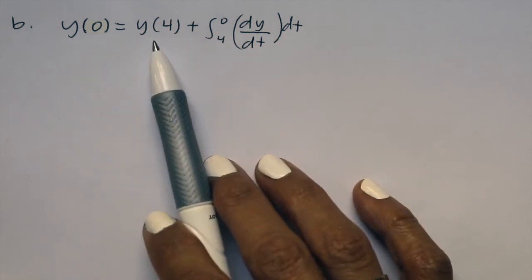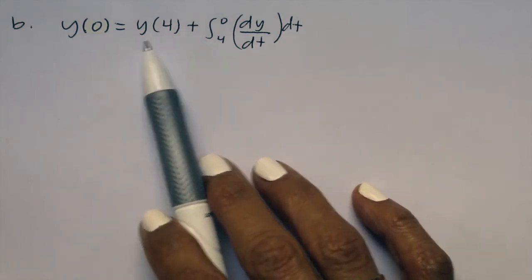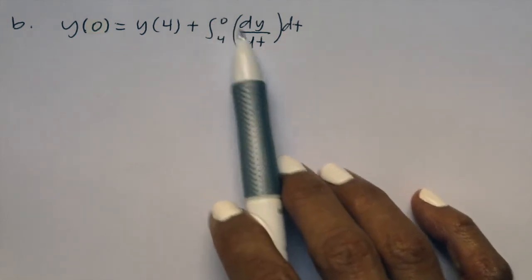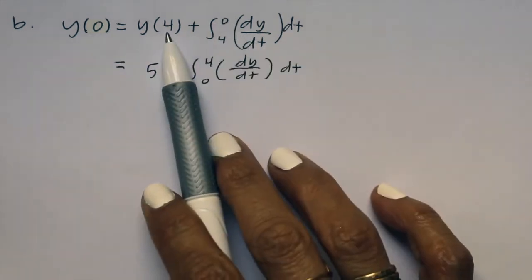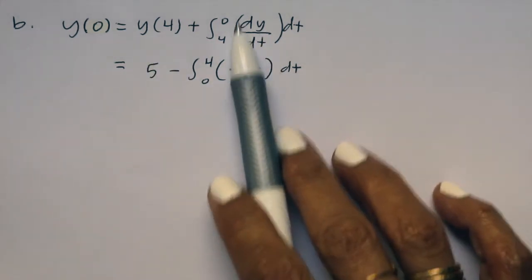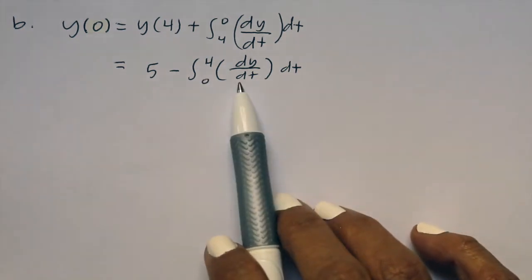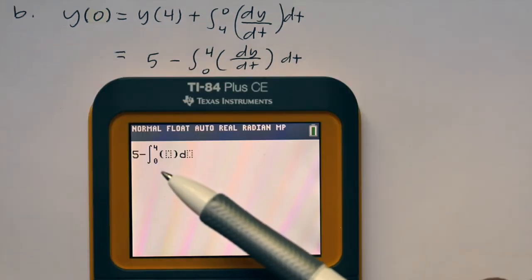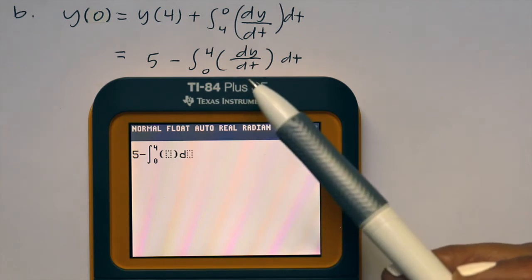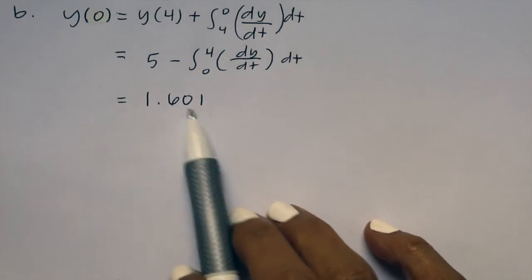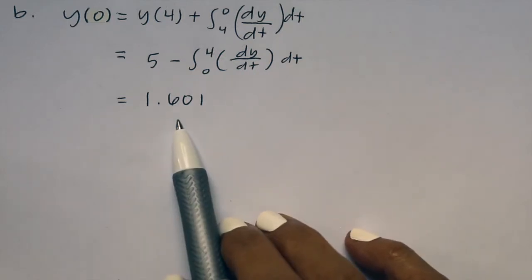In order to do so, we're using the initial condition y of 4 plus the integral from 4 to 0 of dy/dt. y of 4 is the y coordinate when t equals 4, and that was 5. I flipped these and brought out a negative, so it's negative the integral from 0 to 4 of dy/dt. So we have 5 minus the integral from 0 to 4, dy/dt is our y2, and you get 1.601. So 1.601 is the y coordinate of the position of the particle when t equals 0.